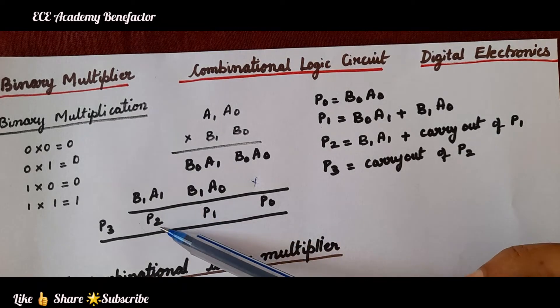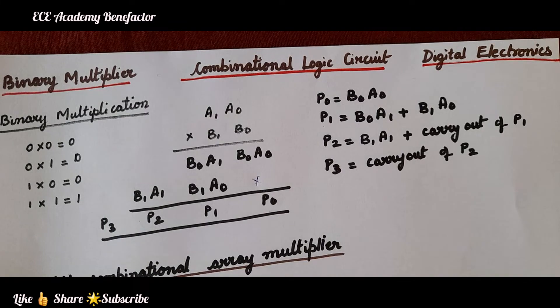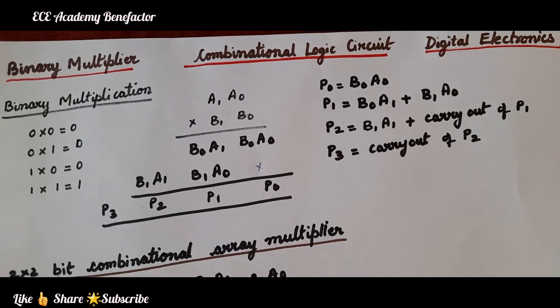2 half adders at p1, p2, and then p3 will be the obtained carry. So, let us see the diagram.